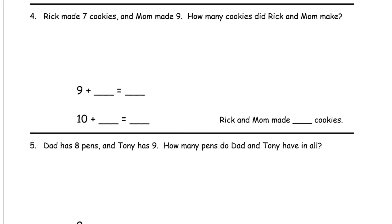Rick made seven cookies and mom made nine. How many cookies did Rick and mom make? So Rick has seven: one, two, three, four, five, six, seven. Those are Rick's cookies. Mom has one, two, three, four, five, six, seven, eight, nine. These are mom's cookies.